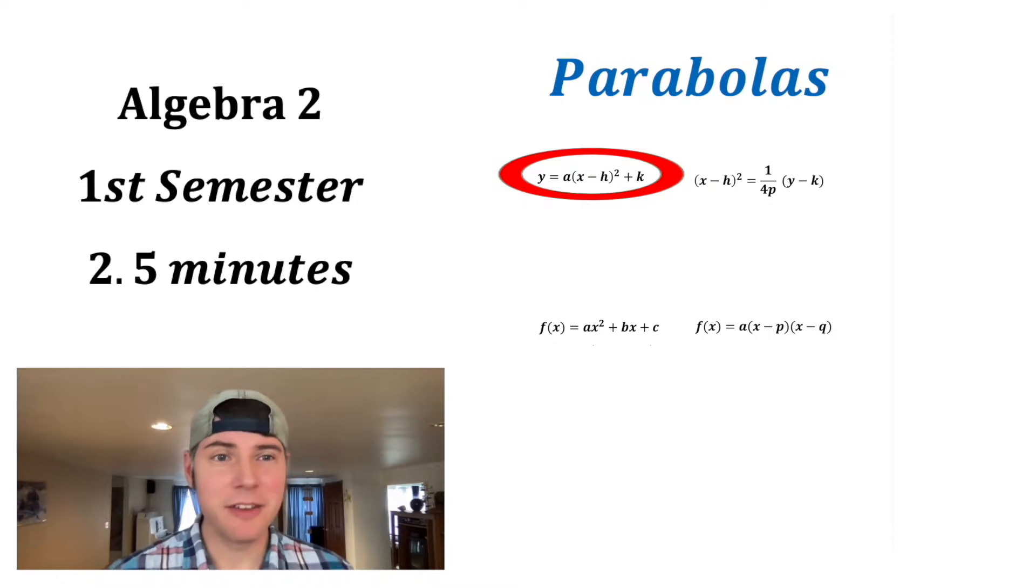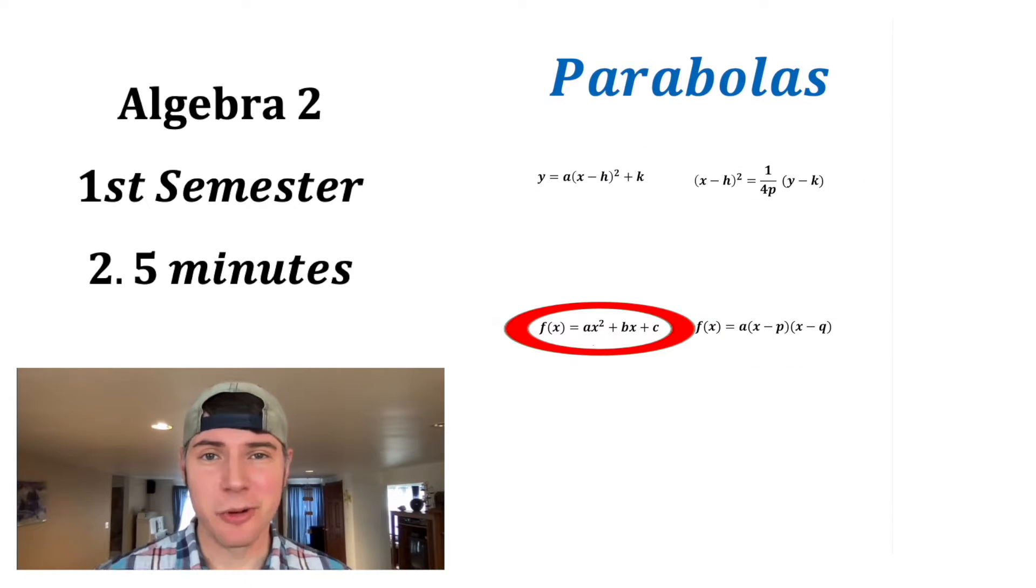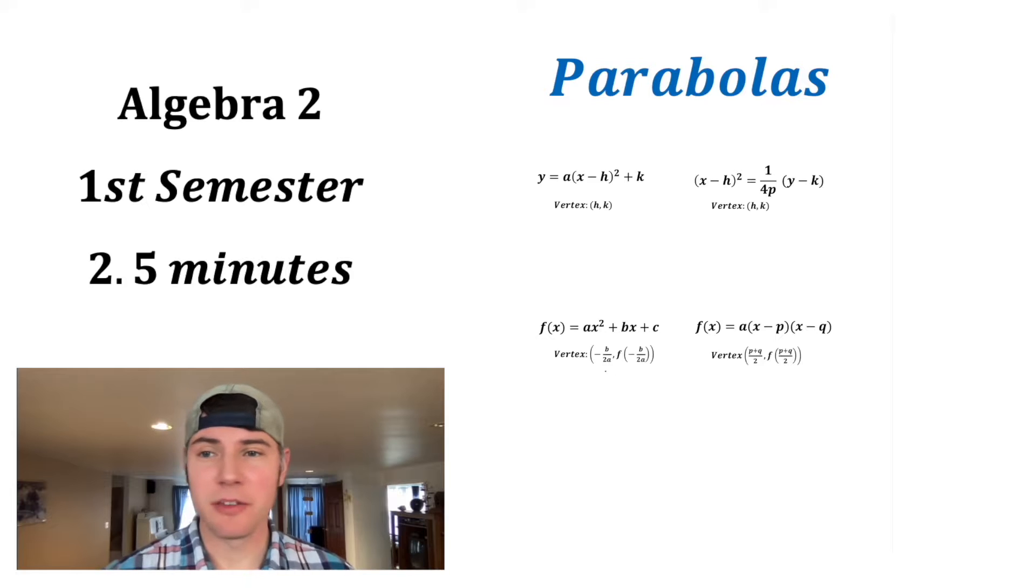They can come in vertex form with an a, vertex form with a 4p, intercept form, or standard form. And depending on which equation you use, you can find the vertex, the axis of symmetry, the focus, or the directrix.